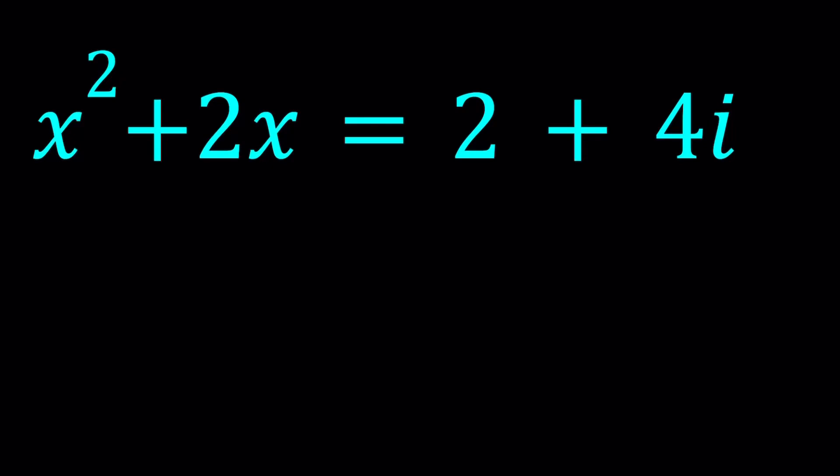Hello everyone. In this video, we're going to be solving a quadratic equation with complex numbers. We have x squared plus 2x equals 2 plus 4i, where i is one of the square roots of negative 1. I'll be presenting two methods, and let's start with the first one.